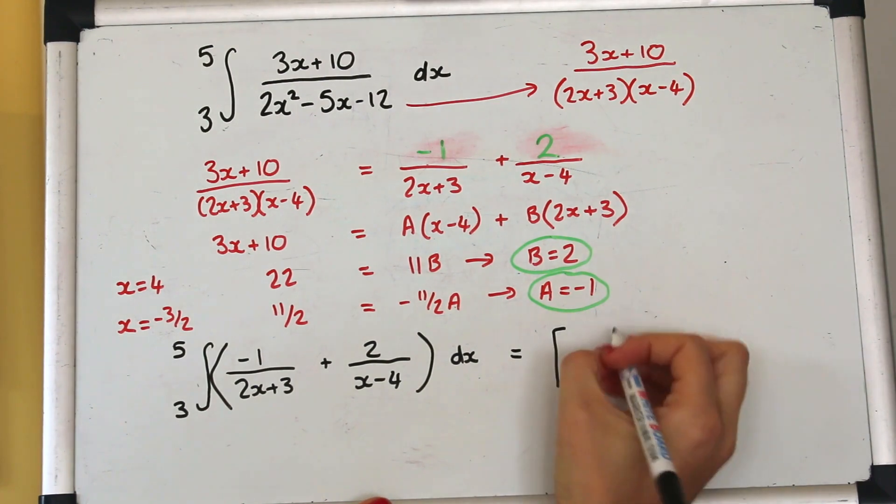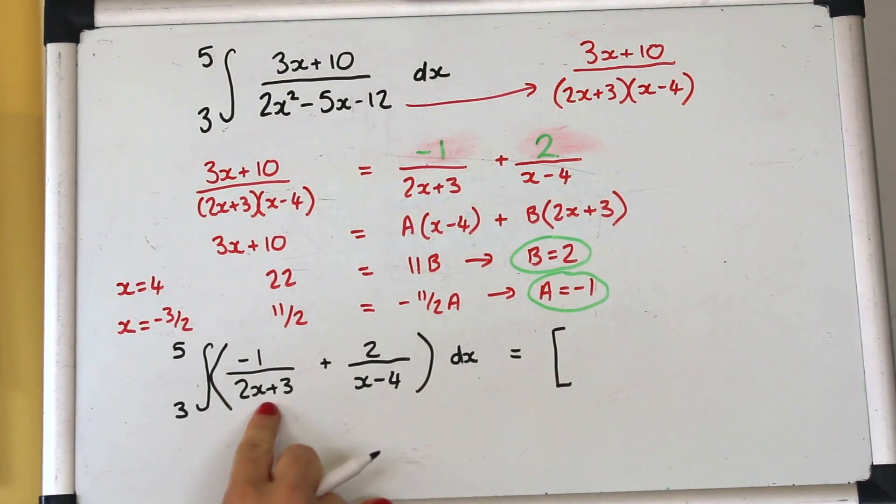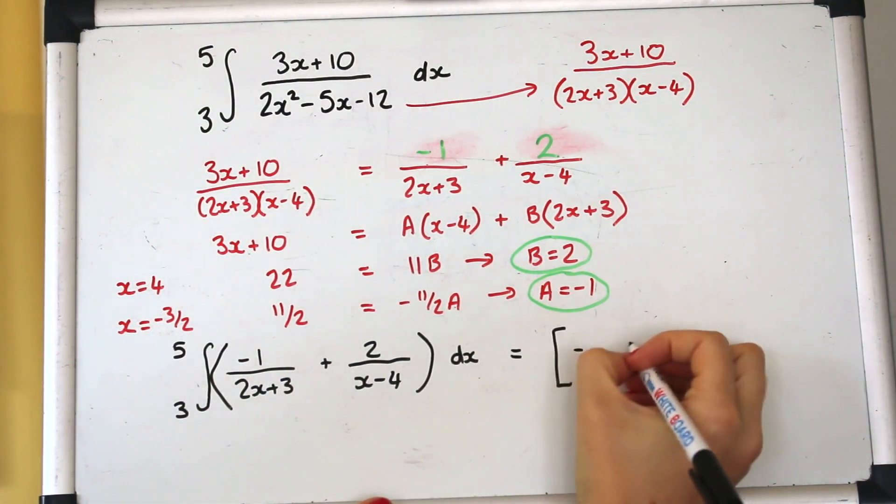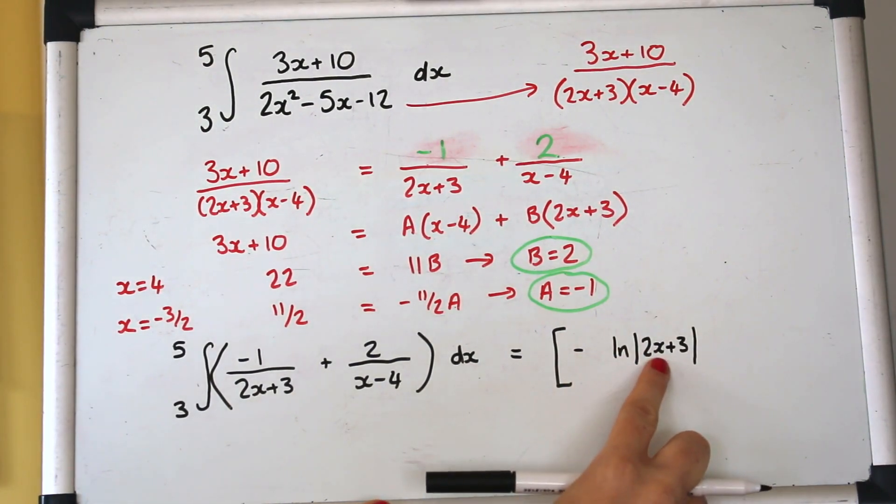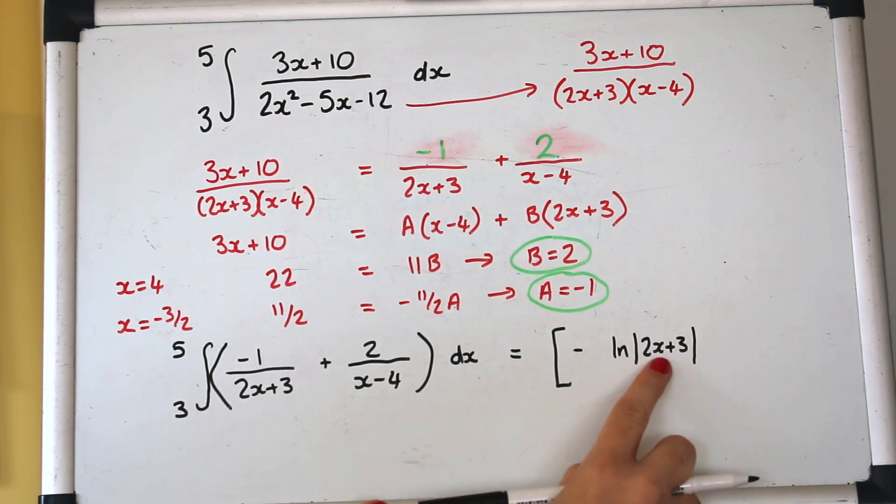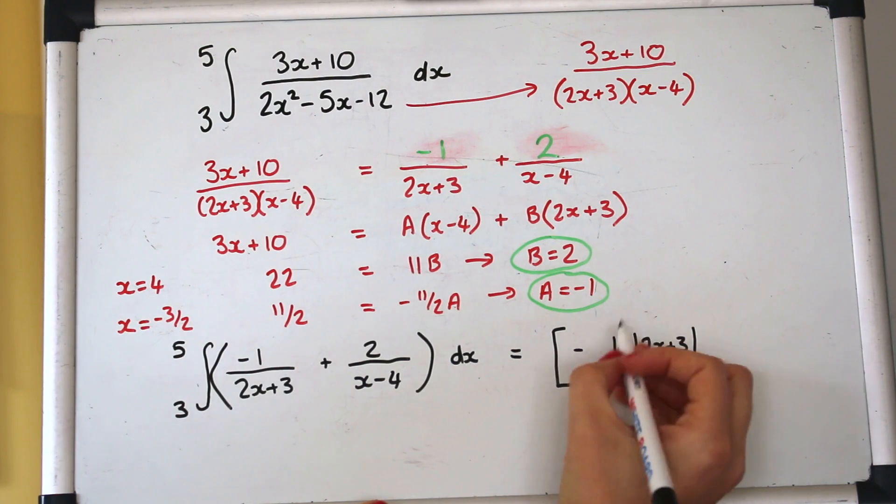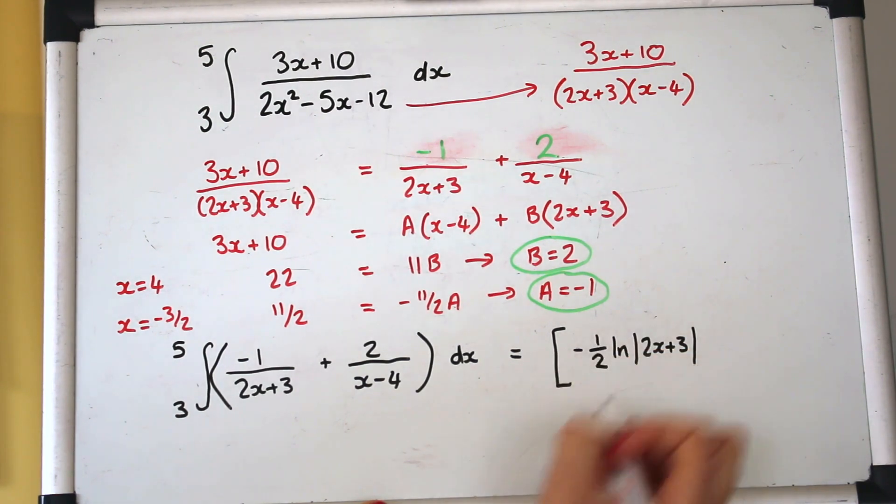Using square brackets this time because it's definite and I'm using limits. So here we've got a minus. Again it's reverse chain rule so it is a log but we need to divide by the derivative of the inner function so that would be 2 so that can go up the front there minus the half.